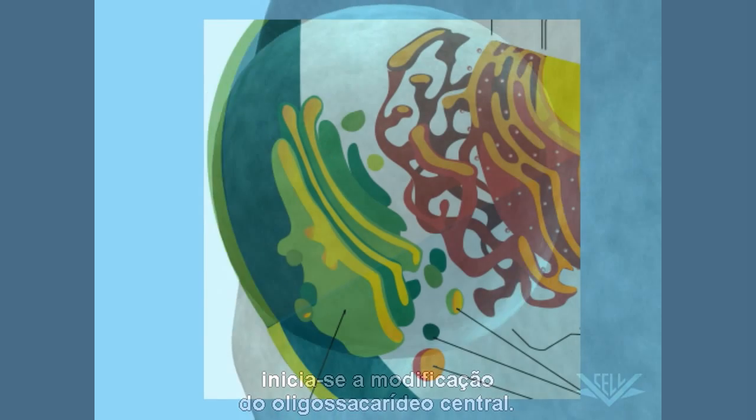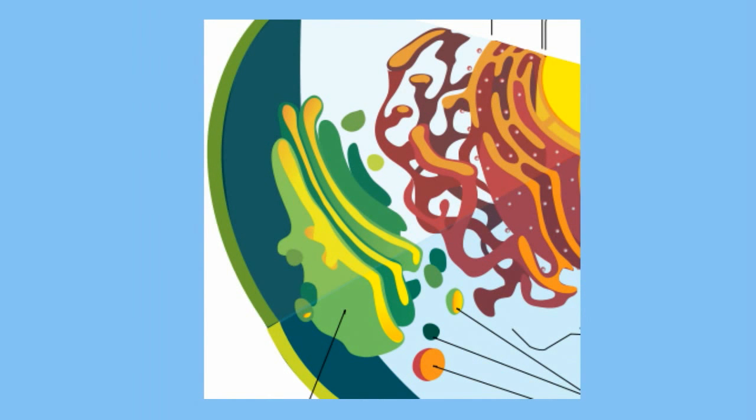The Golgi Apparatus receives these proteins, lipids, and other chemicals from the rough ER and modifies and packs them into vesicles. These vesicles then pinch off and travel to three locations.